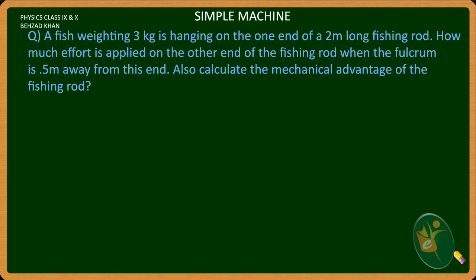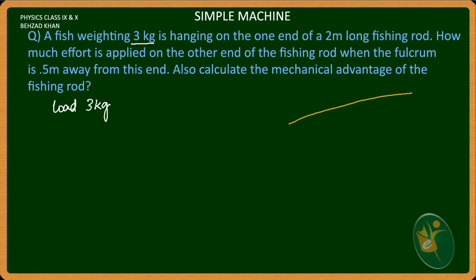In the name of Allah, we will see Simple Machines in America number 1. A fish weighing 3 kg is hanging — it is the load. Let's make a figure first. That's supposed to be our fishing rod, and this is our golden fish.